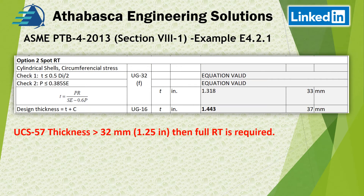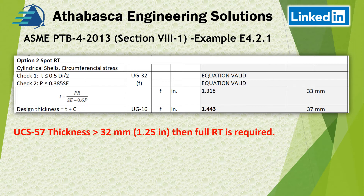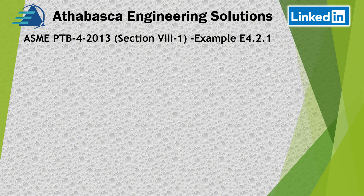For method 1 option 2 using spot RT, we use the same equation but with a joint efficiency of 0.85, so we'd expect a thicker result — and it is: the required thickness is 1.443 inches. However, because of UCS-57, if your thickness exceeds the 32 mm threshold, you need to do full RT anyway. So at the end of the day, spot RT is really not going to be allowed in this case.